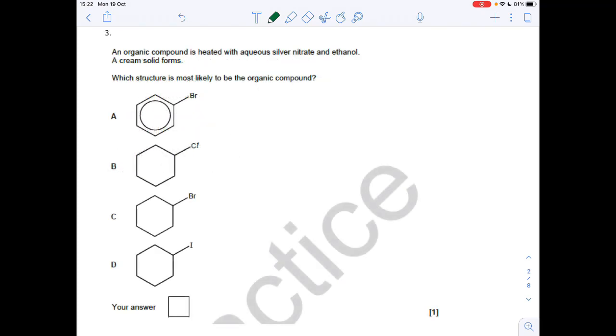Question 3, so we're told that when an organic compound is heated with aqueous silver nitrate and ethanol cream solid forms, I'm just going to highlight aqueous there, so that's important. The cream solid is obviously silver bromide, so it's either that one or that one. Well, the bromobenzene doesn't react with water, whereas C does.